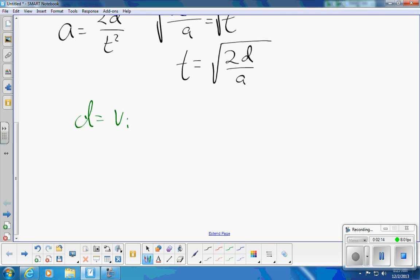d is vi t plus one half a t squared, and if we are not starting from rest, if we need to solve for vi or a, how do we do that? Okay, let's start by solving for vi.